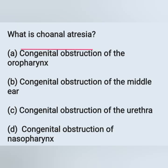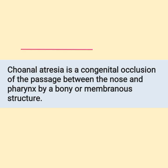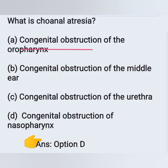Next question: what is choanal atresia? Options: A) congenital obstruction of the oropharynx, B) congenital obstruction of the middle ear, C) congenital obstruction of the urethra, D) congenital obstruction of the nasopharynx. Choanal atresia is a congenital occlusion of the passage between the nose and pharynx by a bony or membranous structure, so the correct answer is option D.